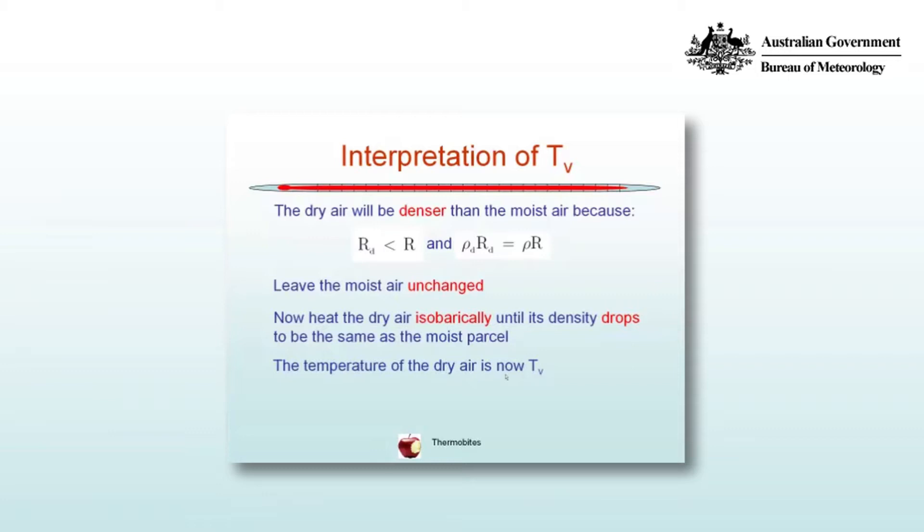So now let's leave the moist air unchanged and take a parcel of air that's dry and heat it isobarically, that is at constant pressure, until its density drops to be the same as the moist parcel. The temperature of the dry air is now the virtual temperature. So the virtual temperature is the temperature that a dry parcel of air has to be raised to until its density is the same as a parcel of moist air.